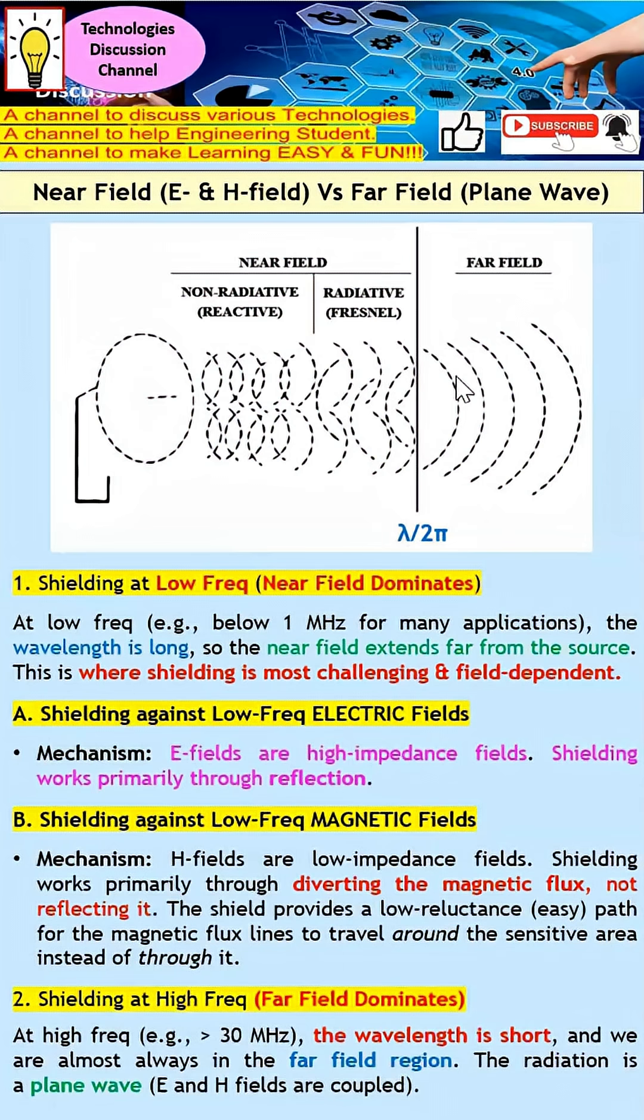As this line moves further away, at low frequency the near field will be dominated. This is where shielding is most challenging and may have significant issues, especially for low frequency magnetic fields.